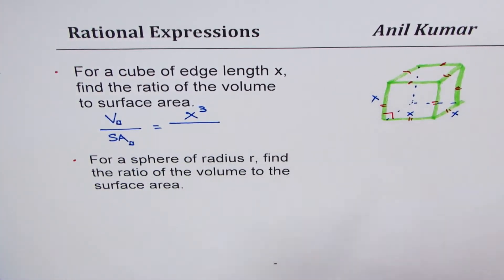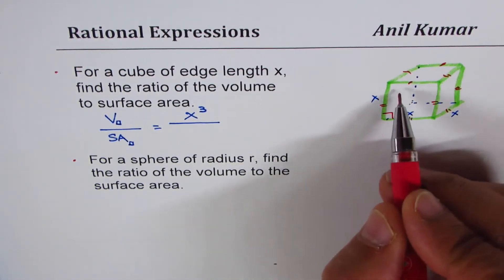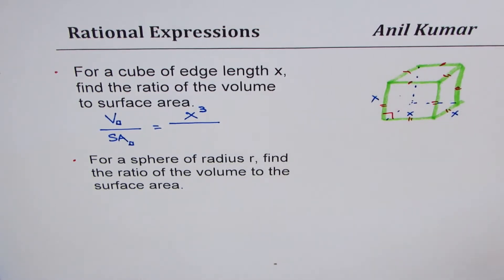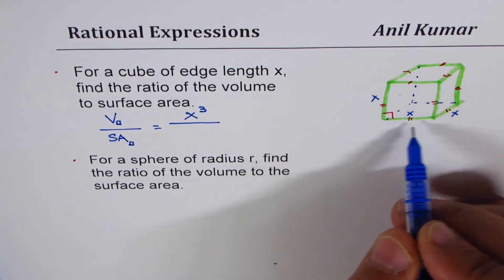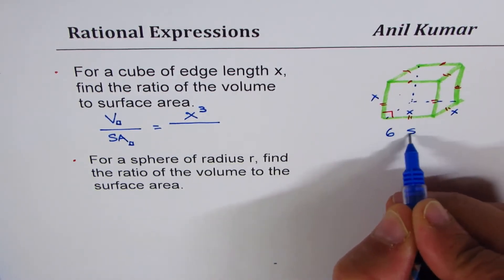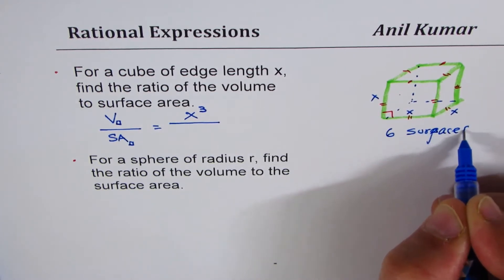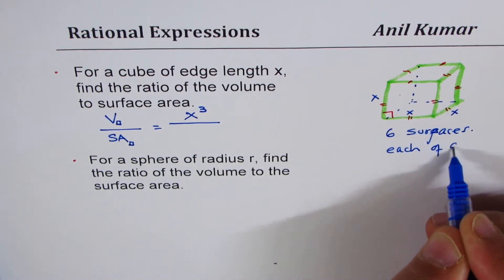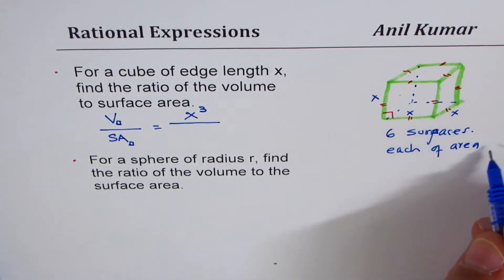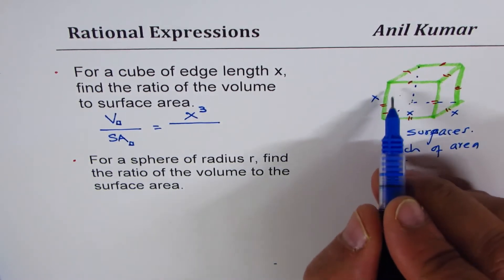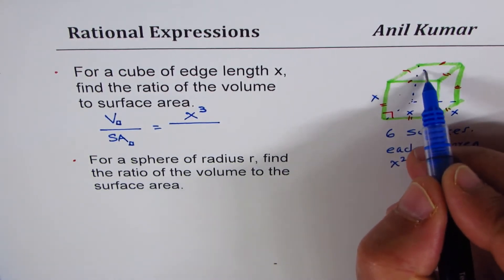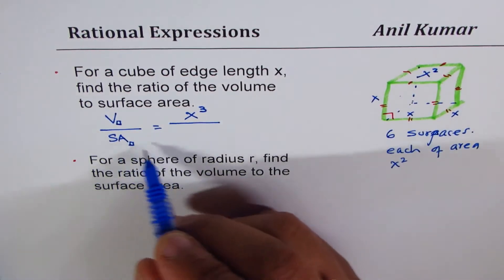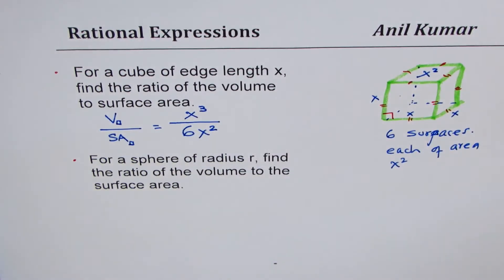How about the surface area? When we talk about surface area, we are actually looking into six surfaces. Let me calculate surface area on the side and then we'll write here and simplify. Surface area is like all surfaces you see, they have same area. So we have six surfaces, each of area x square. Front x times x, sides x times x, bottom and top x times x. So surface area is 6x square. Even if you don't know the formula, you can work it out.